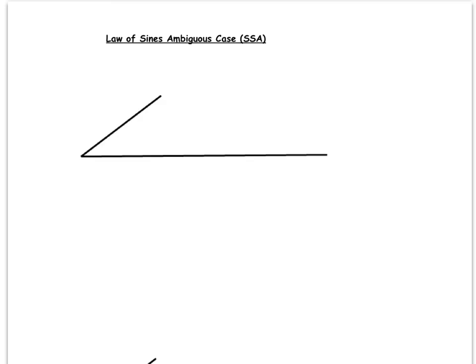Now we need to look at a special situation involving the law of sines in which you're given two sides and then an angle that's not in between the two sides, the SSA case.